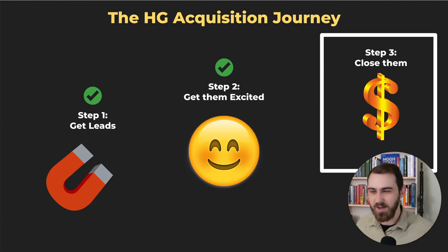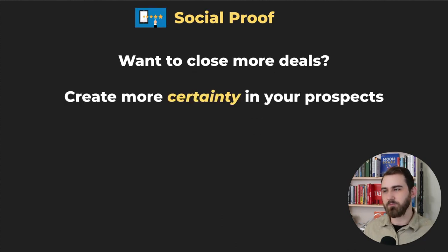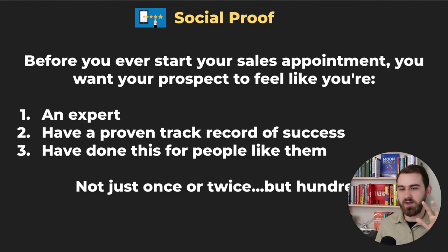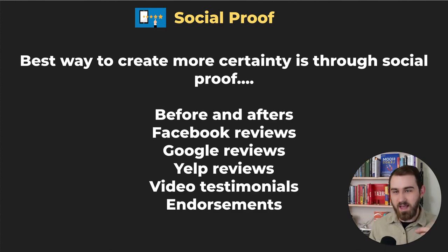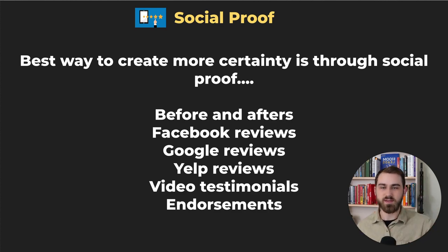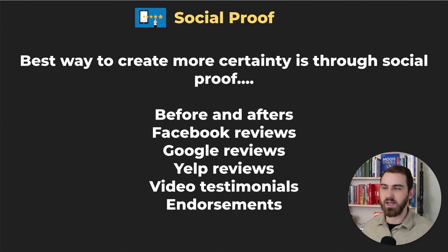Now you're getting them excited to show up — but how do you actually close them? To close prospects consistently, you need three main things: social proof, an irresistible offer, and the five question framework. You want to create more certainty in your prospects. Before you even start the sales appointment, your prospect should feel like you're an expert with a proven track record who has done this for people like them — not once or twice, but hundreds of times.